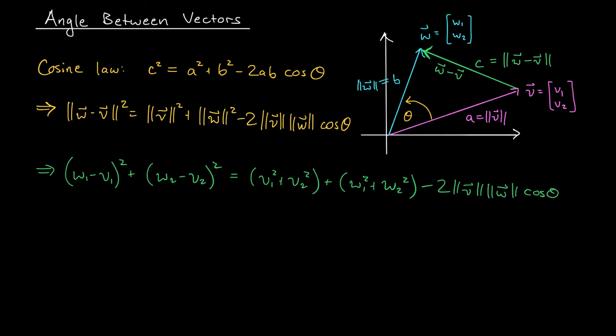At this point, we can clean up this nasty expression by expanding the term on the left and canceling with lots of stuff here on the right. I'm going to let you work through the calculations. There's no tricks here. What you'll find is that V1W1 plus V2W2 is equal to norm of V norm of W cos theta.